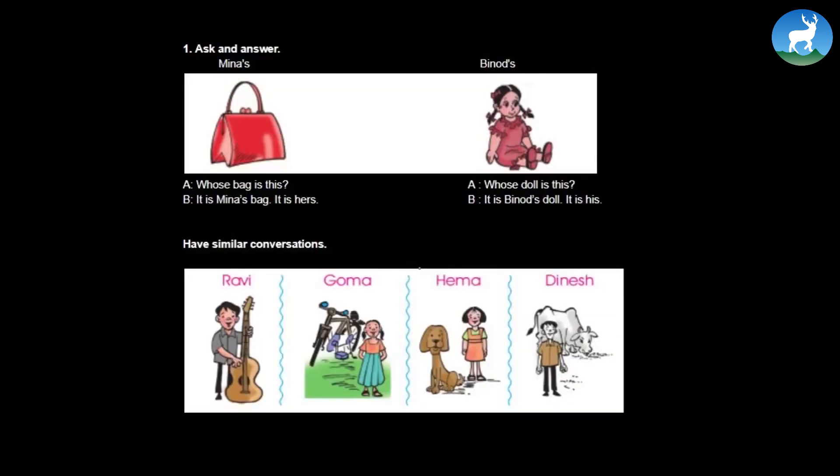So today we are beginning a new unit, unit 8, describing possessions. To begin with, I want you to observe these pictures as shown on the screen. Now the questions are simple. Remember the chapter name, it's describing possessions and you'll understand what possession means after I read these examples.